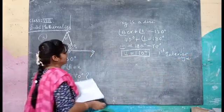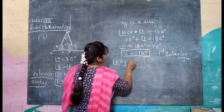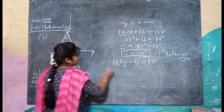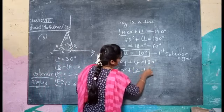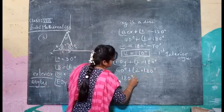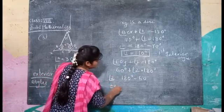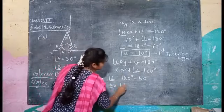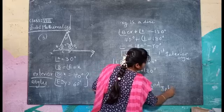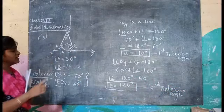The second interior angle we will find out now. Same thing — XY is the line. Angle EDY plus angle 2 equals 180 degrees. EDY is 60 degrees, so 60 plus angle 2 equals 180. Angle 2 equals 180 minus 60, which is 120 degrees. So we got the second interior angle — 120 degrees. We got both the first and second interior angles.